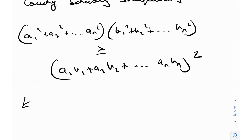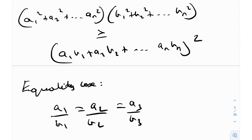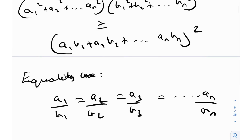When does equality occur? Equality occurs when a₁/b₁ = a₂/b₂ = a₃/b₃ = … = aₙ/bₙ — when all these ratios are equal to one another. In general we have the inequality, but this is the equality case.